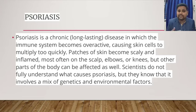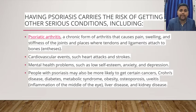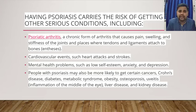Some of the common places in which psoriasis can develop are the scalp, elbows, and knees. People having psoriasis can also have a high risk of getting psoriatic arthritis, which causes pain, swelling, and stiffness of the joints.